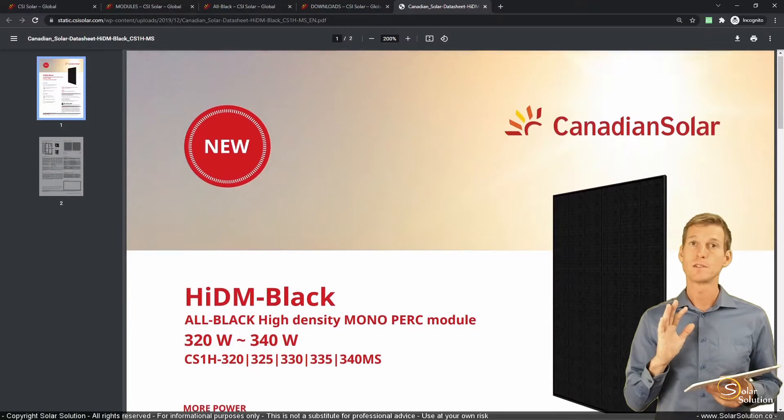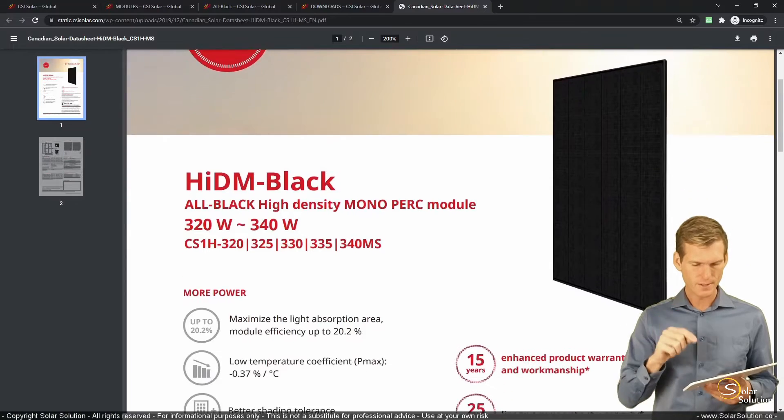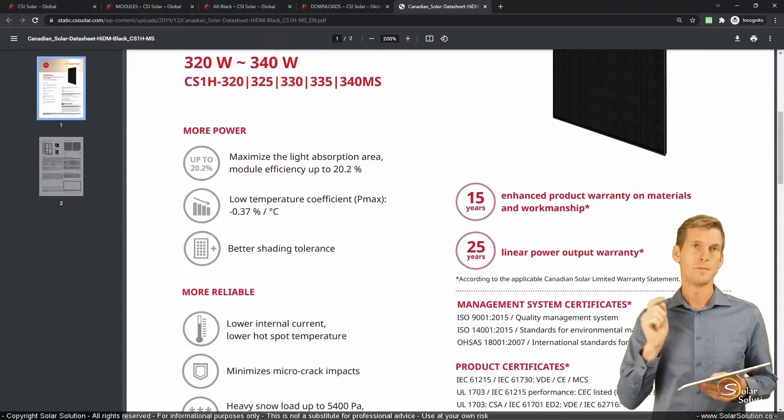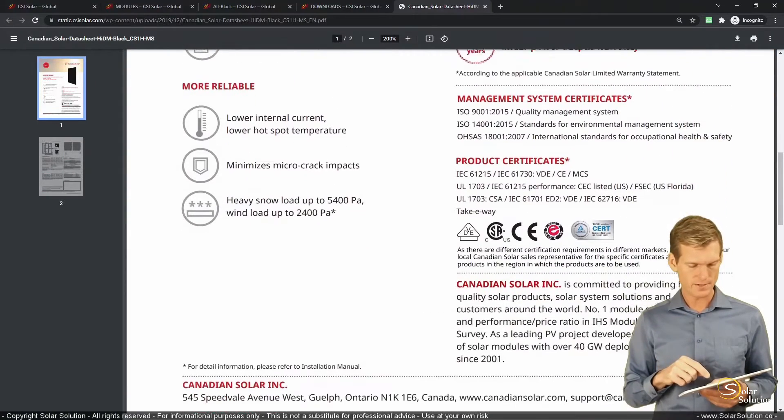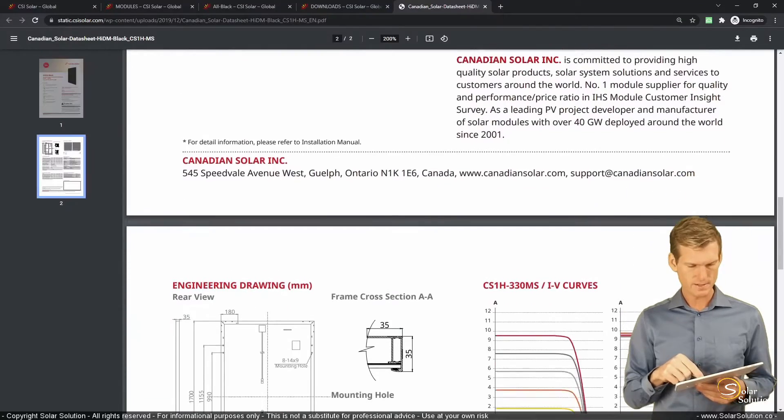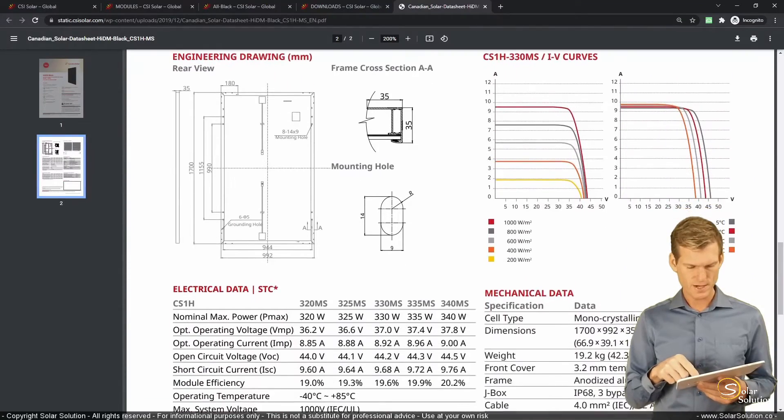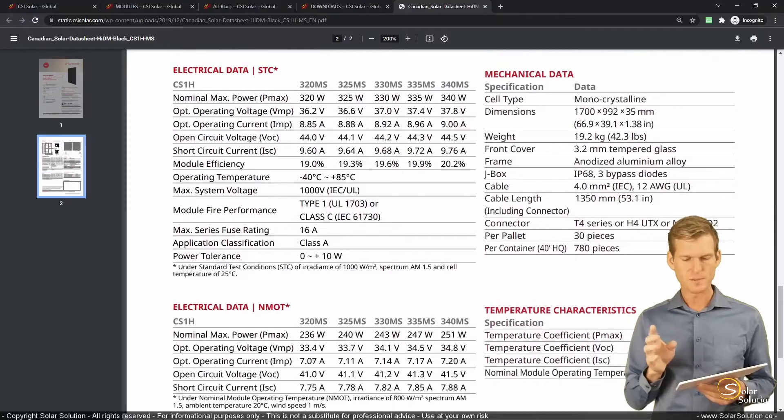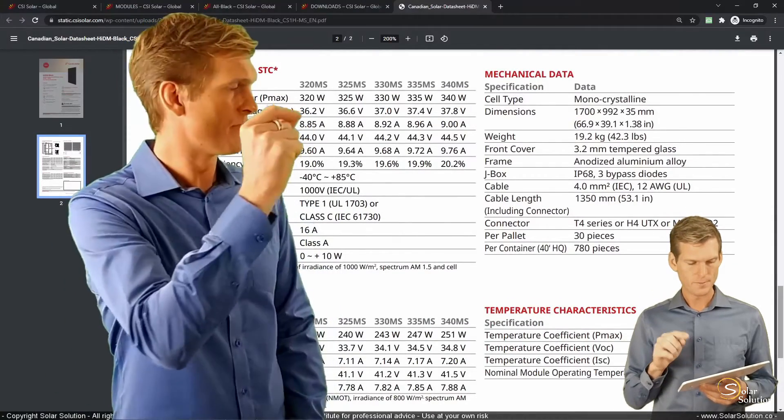So let's assume that we're interested in this module, and we want to know whether it has bypass diodes and how many bypass diodes it has. It is not that complicated, because you scroll down and you go to the section. It depends which manufacturer you're dealing with, right?